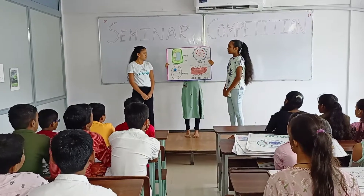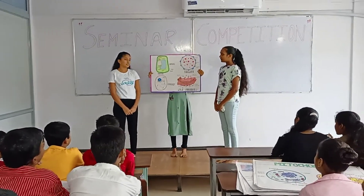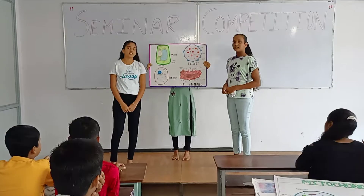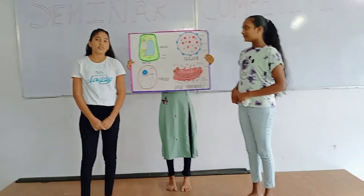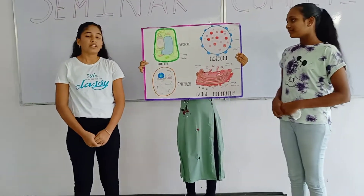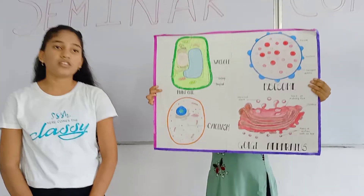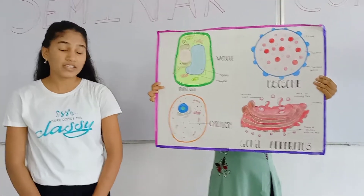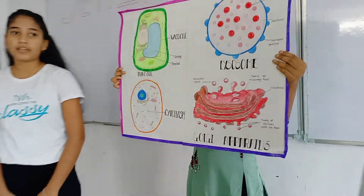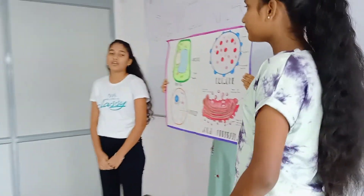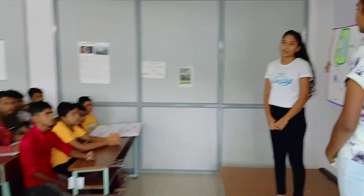Cynthia, can you explain what is vacuole? Vacuoles are present in eukaryotic cells such as plant and fungi. Vacuoles have a semi-fluid substance called cell sap, which is made up of various materials like minerals, sugar, organic acids, and carbohydrates.